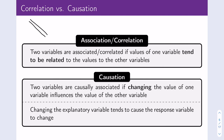Thinking back to the Maine example, if margarine consumption were driving Maine's divorce rate, then margarine would be the explanatory variable. But is there any reason to think that increasing margarine consumption would cause Maine's divorce rate to go up? No, there's no reason at all. Similarly, changing the divorce rate wouldn't affect margarine consumption. So that is definitely not causation.